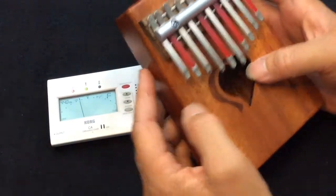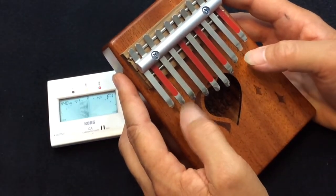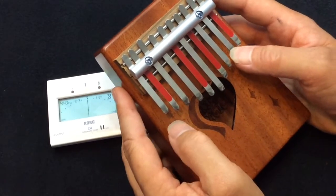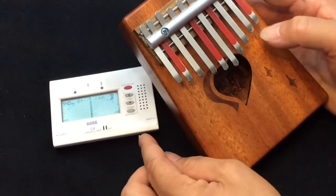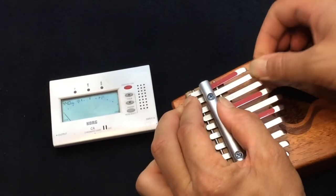But check this out. It seems like that's the way you'd want it tuned, but I can take that note, B natural, and tune it to B flat. It's held in place by friction.